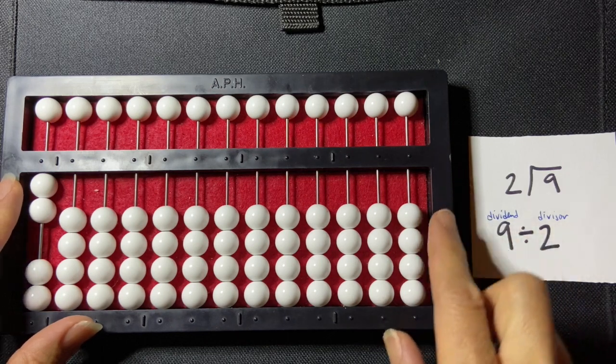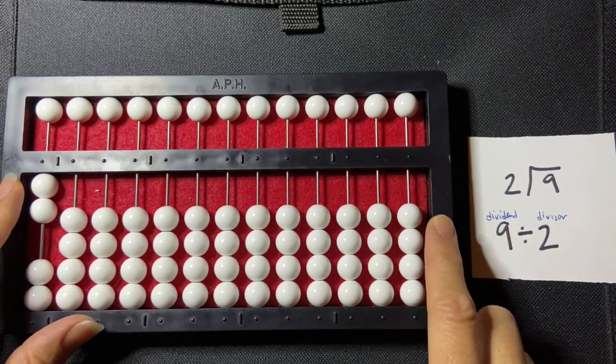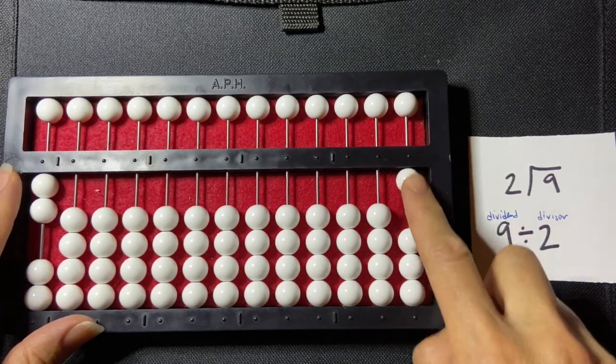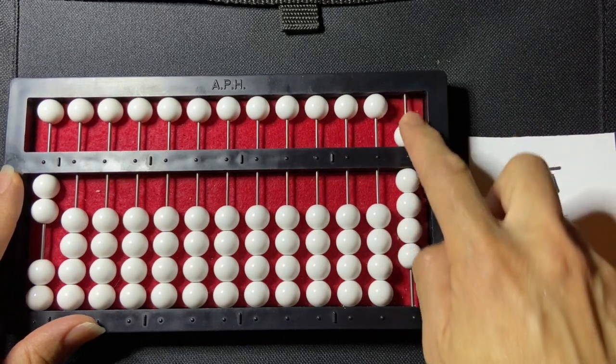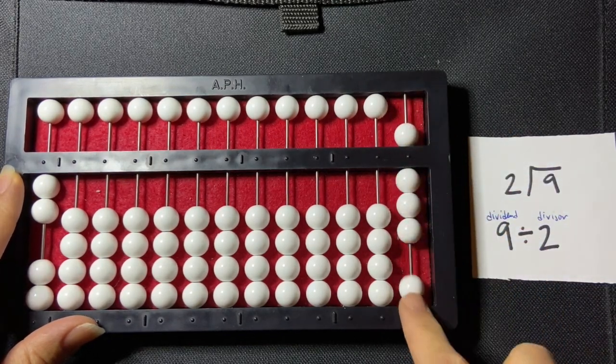Then I'm going to write my dividend on the far right-hand side and so I'm going to set 9 there, 1, 2, 3, 4, 5, 6, 7, 8, 9.